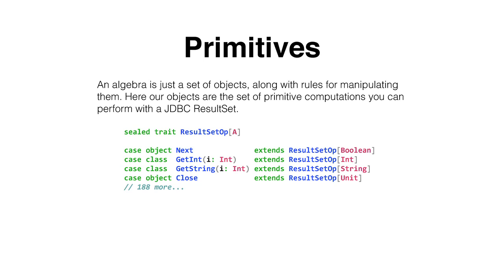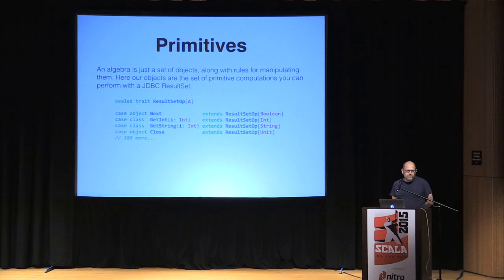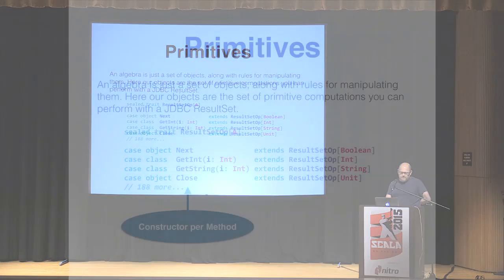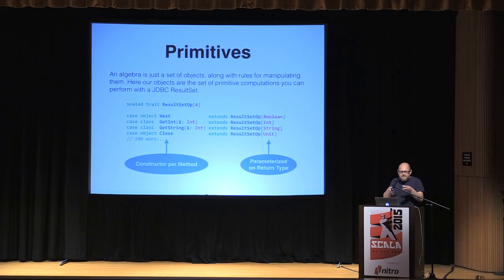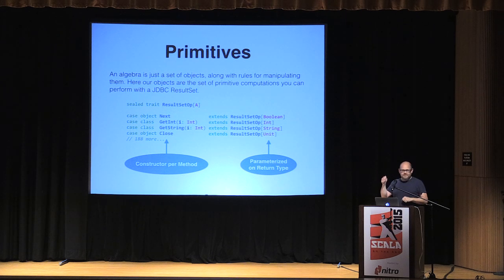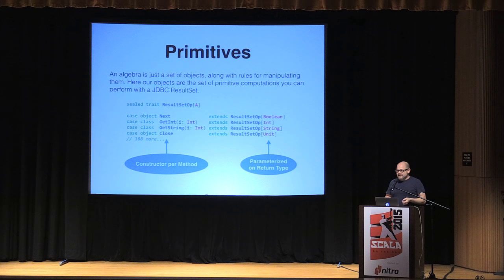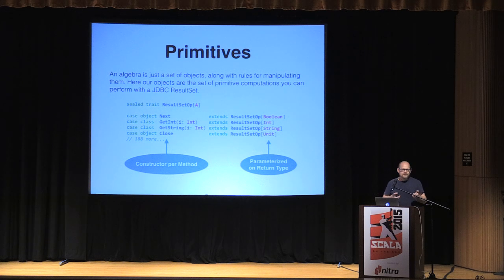The first thing we want to do is define a data type for the operations — here, the operations you can perform on a ResultSet. We have a sealed trait with one constructor for each method on the ResultSet. This type parameter captures the return type. We can think of these little values as little programs — they describe something we want to do. We could imagine putting a bunch in a list, and an interpreter that takes a ResultSet and a list of these, calls the corresponding methods and captures results. That's not very useful, but in principle that's what we want: the program as a piece of data, separate from the process of actually running it.